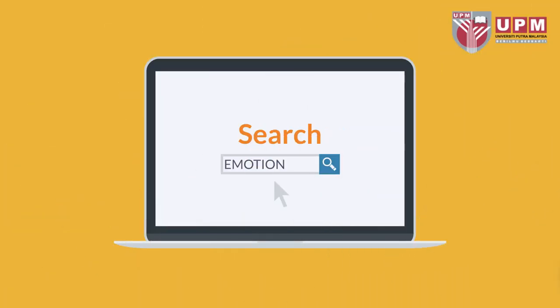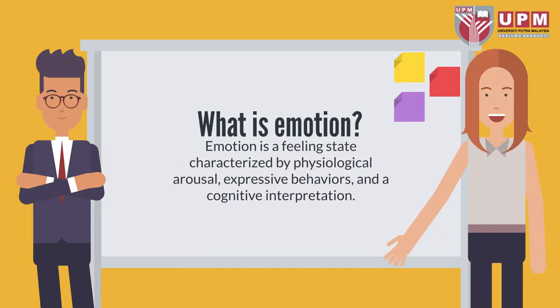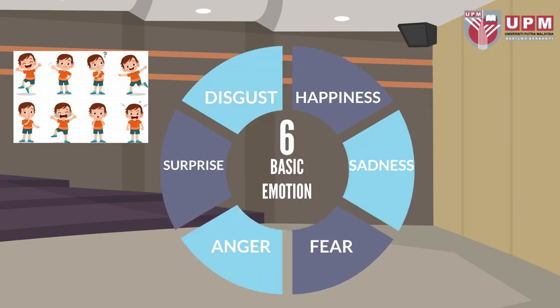Next topic is emotion. Emotion is a feeling state characterized by physiological arousal, expressive behaviors, and a cognitive interpretation. Here we have six basic emotions: first, happiness; second, sadness; third, fear; fourth, anger; fifth, surprise; and sixth, disgust.